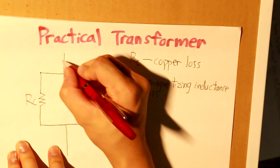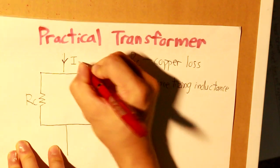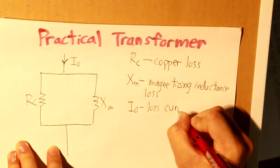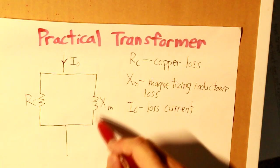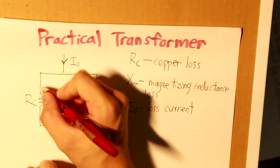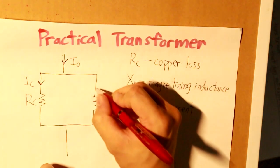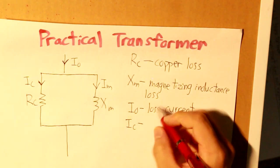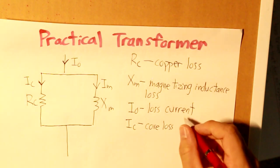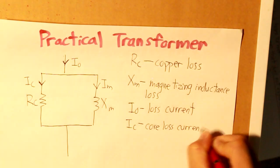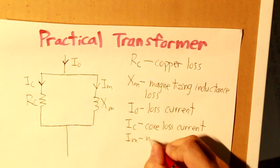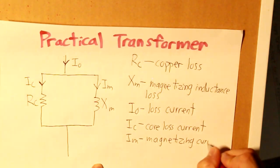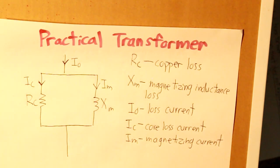So, a current, let's write here, you can name it I0. I0 would be the loss current. The loss current would be split between these two pathways. And what we have is IC here and then IM. And then IC would be the core loss current, or copper loss current. And IM is the magnetizing current.